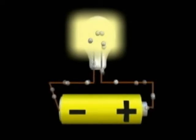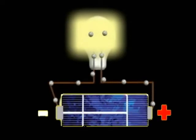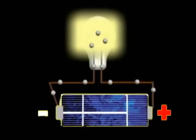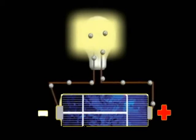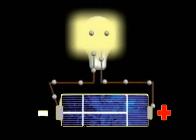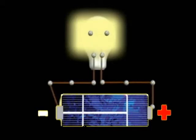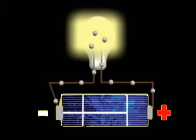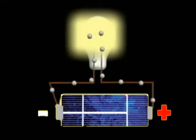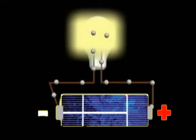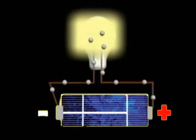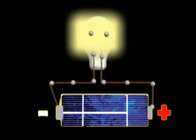A solar cell acts much like a battery cell. When light shines on the surface, energy is picked up by electrons. They use this energy to move from the negative terminal of the cell through a circuit to the positive terminal of the cell.